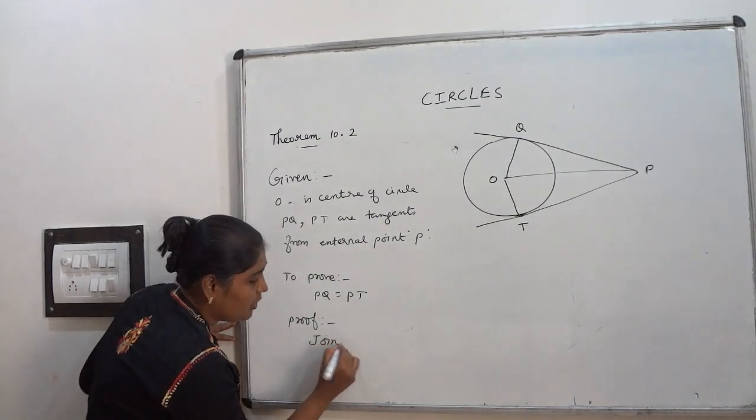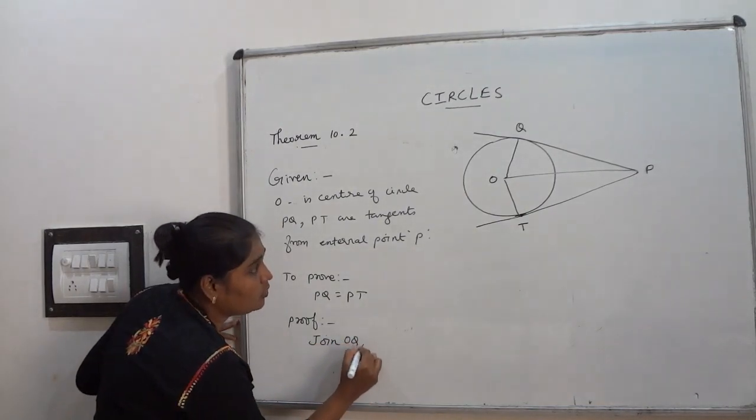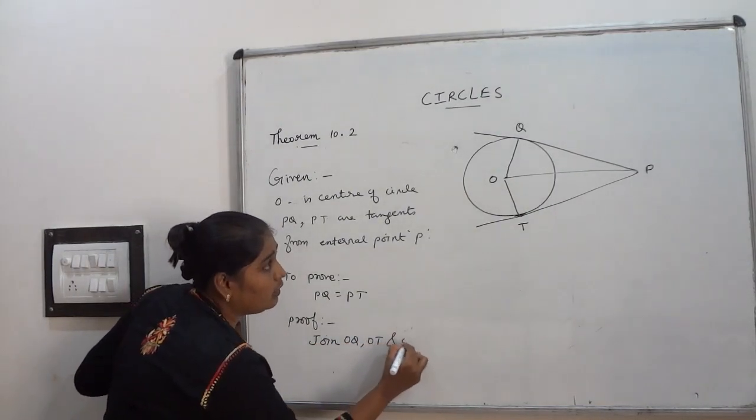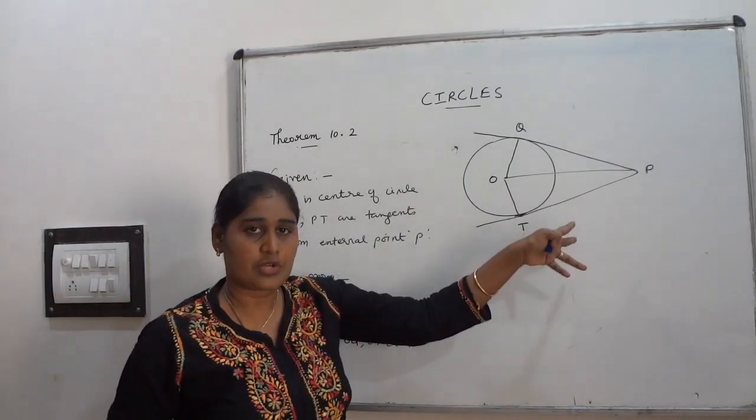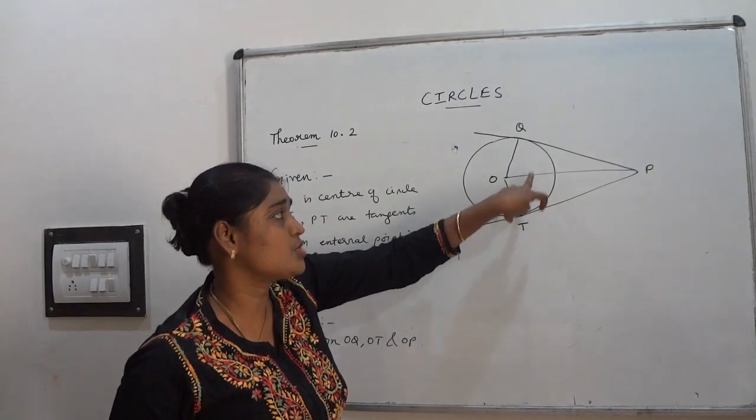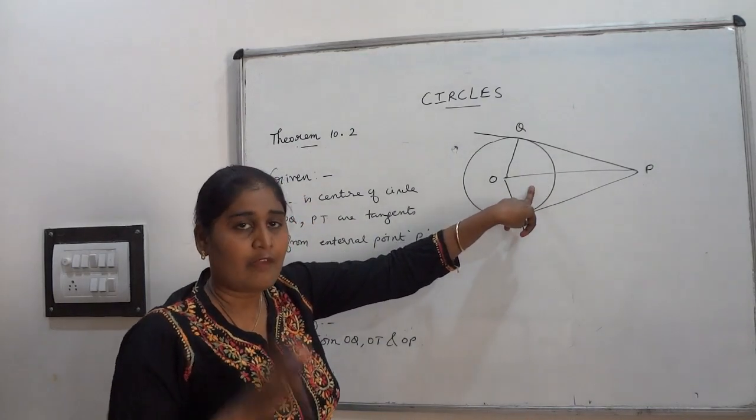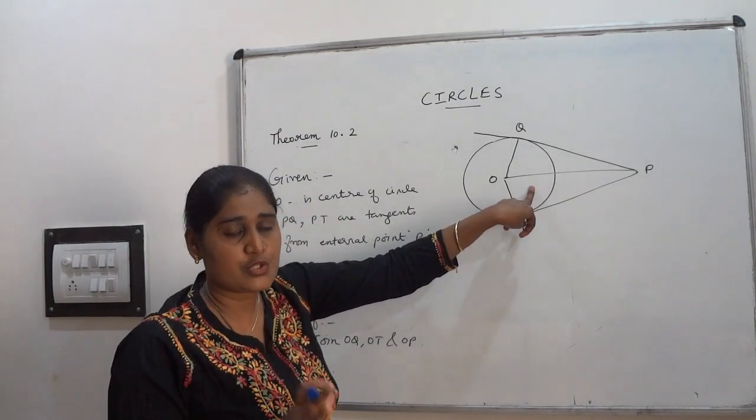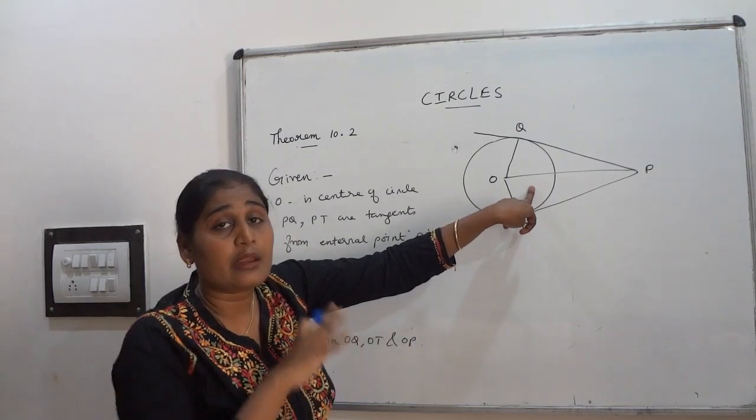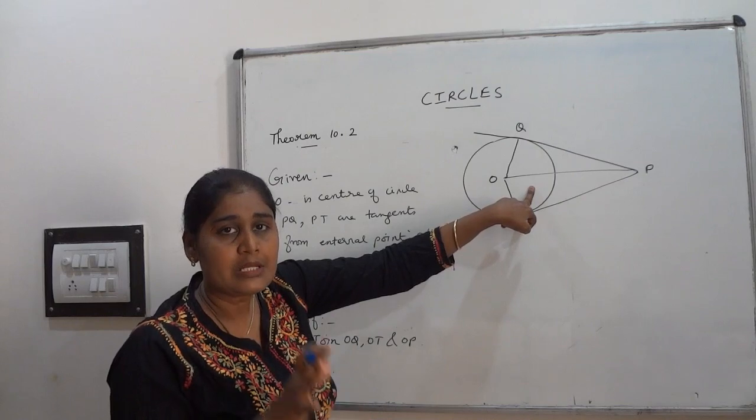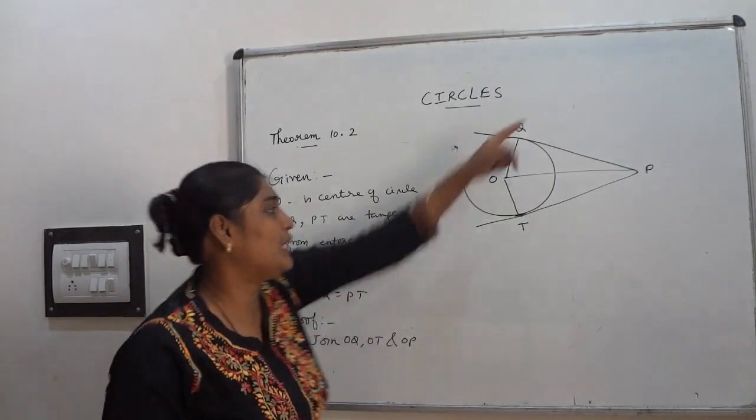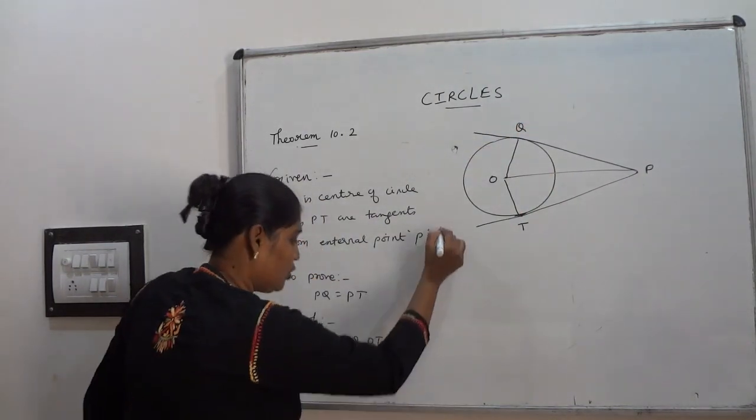First write that join OQ, OT and OP. So by joining that point I will get two triangles. Now I am going to prove that these two triangles are congruent. After showing that congruency of these two triangles, I can tell that the remaining parts of the triangles are equal by CPCT. So then I can prove PQ equal to PT. So how I am going to do? Let us see.